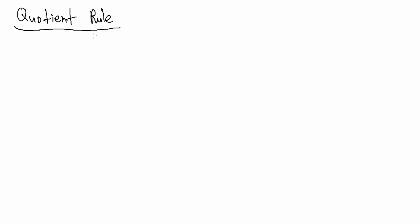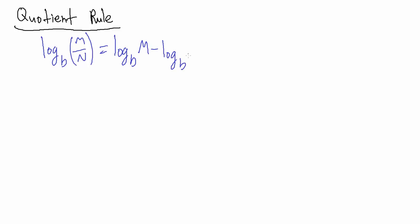In this video we're going to talk about the quotient rule for logarithms. This is going to be almost identical to the product rule in the previous video, but it's good to see this sort of thing over and over. The quotient rule says: the base B log of M divided by N equals the base B log of M minus the base B log of N.